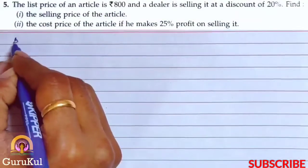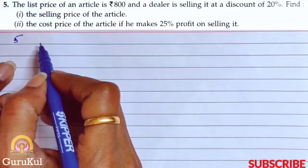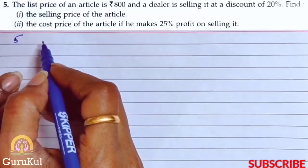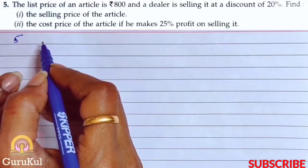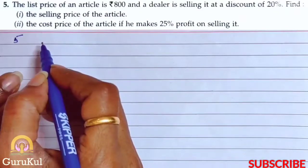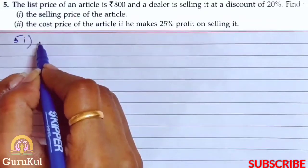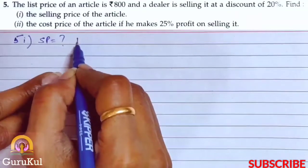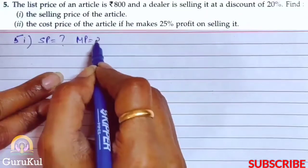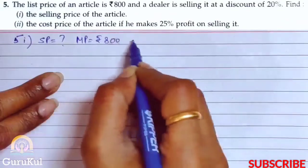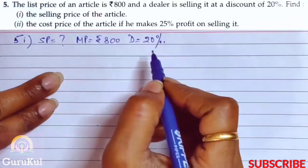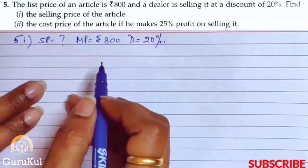Now question number 5. The list price of an article is Rs.800. List price means the marked price. And the dealer is selling it at a discount of 20%. So first part of the question is we have to find the selling price. Given mark price is equal to Rs.800 and discount given is 20%.